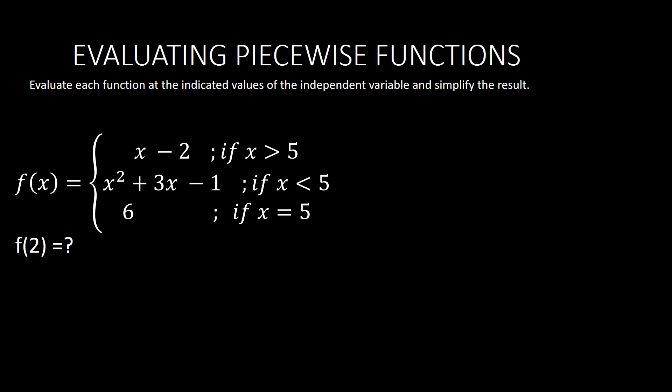As you've noticed, this is an example of a piecewise function because there are more than two functions inside it. The first function is x minus 2, the second is x squared plus 3x minus 1, and the third function is 6. Notice there are three functions.